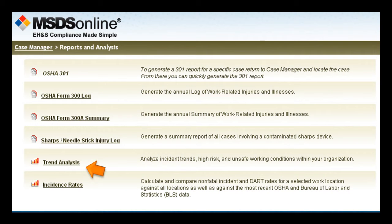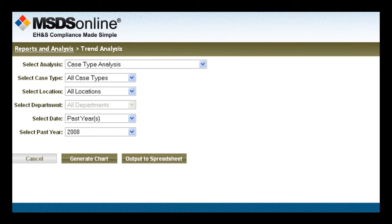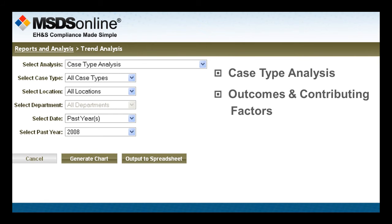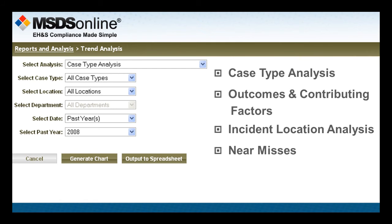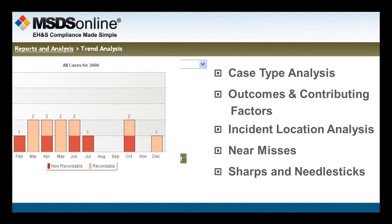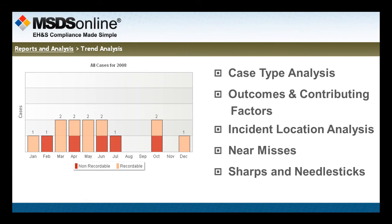The feature that can really help transform your organization is the powerful trend analytics tools. They allow you to generate all kinds of detailed analysis including case type analysis, outcomes and contributing factors, incident location analysis, near misses, and sharps and needle sticks. Each of these can be output into easy-to-read charts or exportable spreadsheets, arming you with at-a-glance, real-time information to quickly identify hazard areas, initiate corrective actions, and make better decisions.